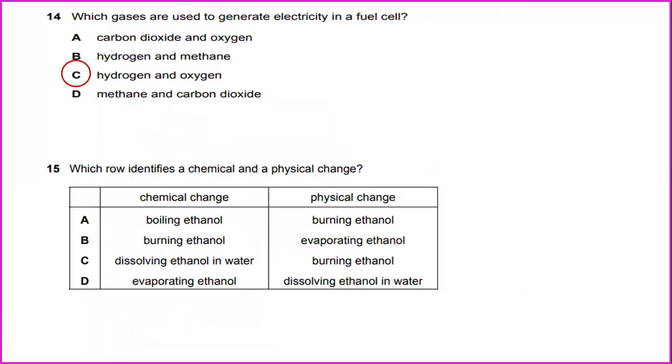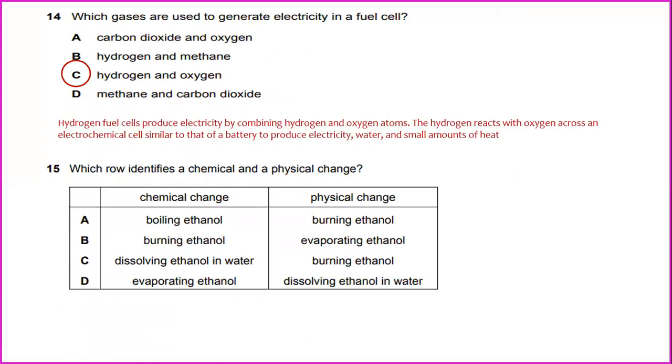Which gases are used to generate electricity in a fuel cell? Hydrogen fuel cells produce electricity by combining hydrogen and oxygen atoms. The hydrogen reacts with oxygen across an electrochemical cell similar to that of a battery to produce electricity. The answer for this will be hydrogen and oxygen. Which will identify chemical and physical changes? The answer for number 15 is B.